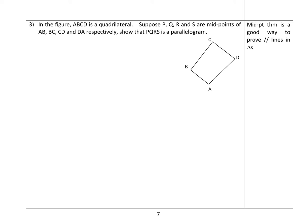Question three. In the figure, ABCD is a quadrilateral. Suppose P, Q, R, S are the midpoint of AB, BC, CD, and also DA. You have to show that PQRS is a parallelogram.